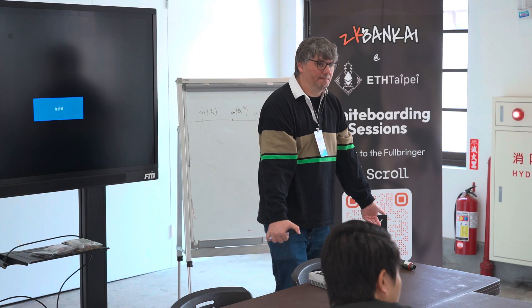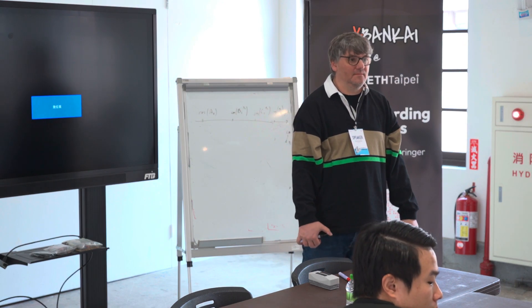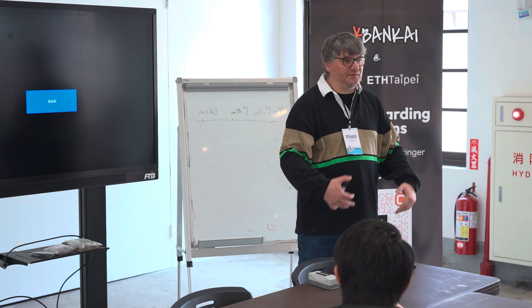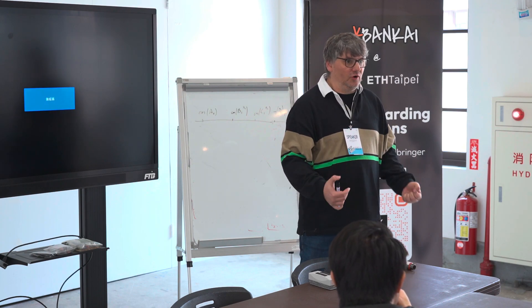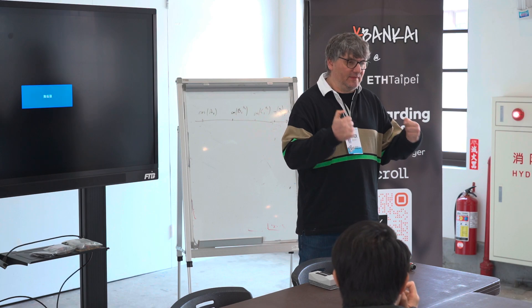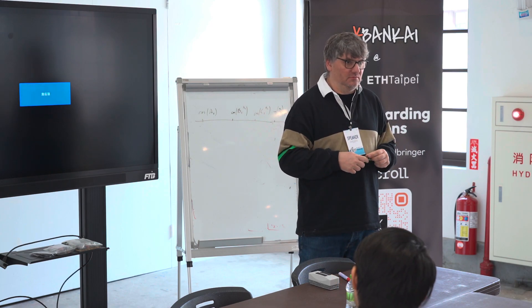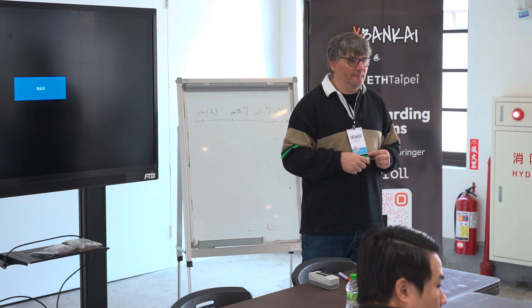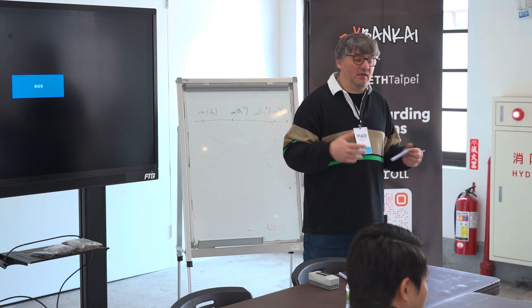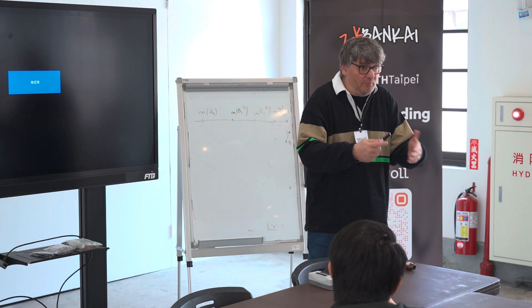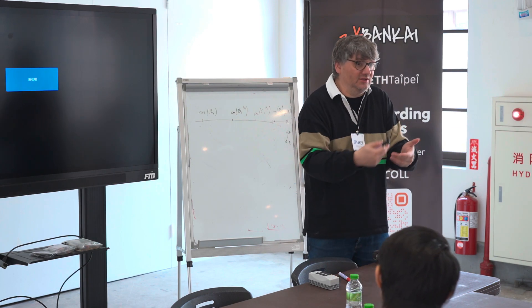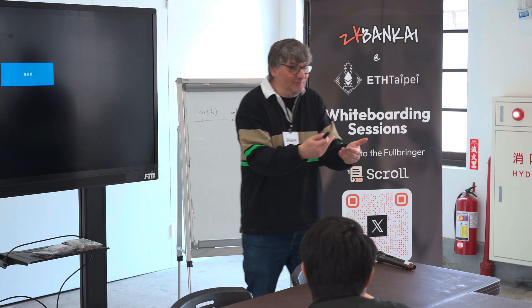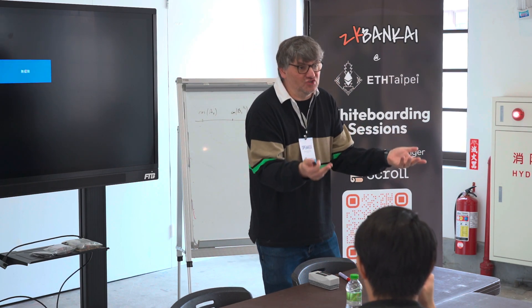Having the capability to build the proof is a sufficient condition for including a dependent state from another chain. What distinguishes having the capability versus just being a full node? Well, if you have a full node of the other chain and the state matches, you will be able to build the proof by definition.